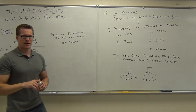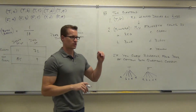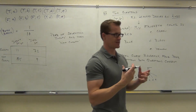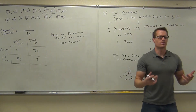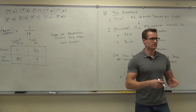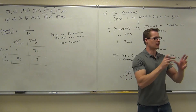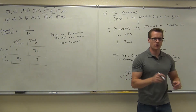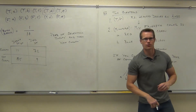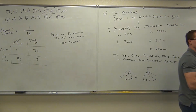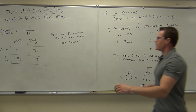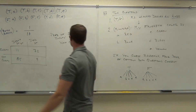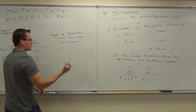That 'and' in the multiplication rule we just talked about really means 'and then' — in successive trials. A and then B. So if you wanted to put 'and then,' that would separate them for you. That's what we really mean. So find the probability of selecting guilty and then not guilty.